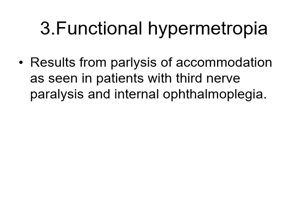Functional hypermetropia is the third type, resulting from paralysis of accommodation as in patients with third nerve paralysis and internal ophthalmoplegia. When there is third nerve paralysis, the ciliary muscle is deprived of its nerve supply, so there will be no accommodation. This paralysis of accommodation causes flattening of the lens, and rays from infinity are focused behind the retina. This is called functional hypermetropia.